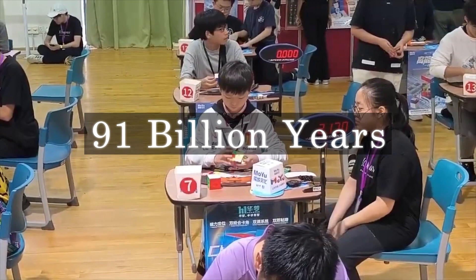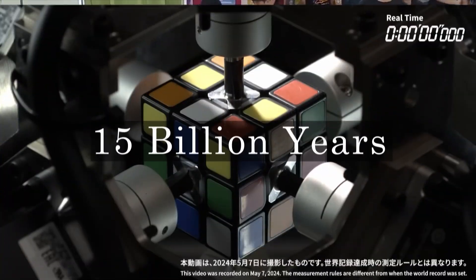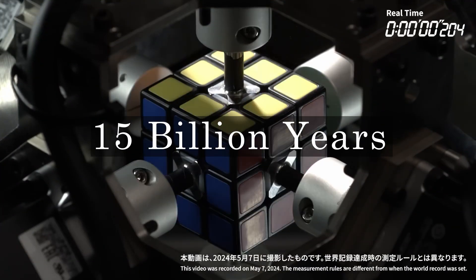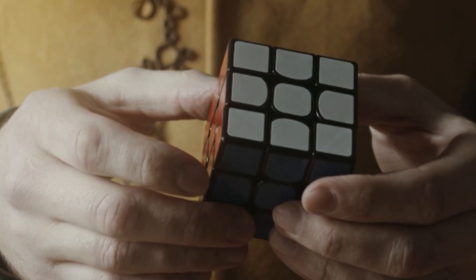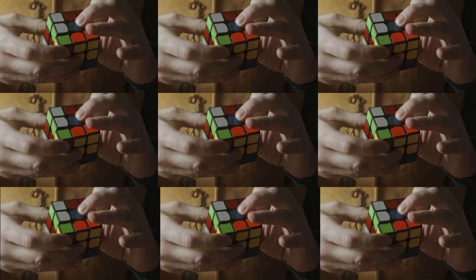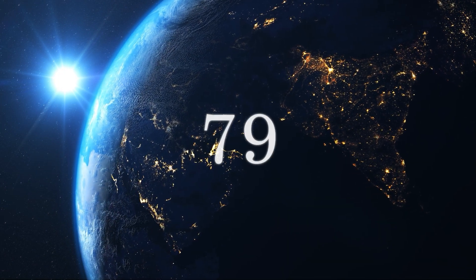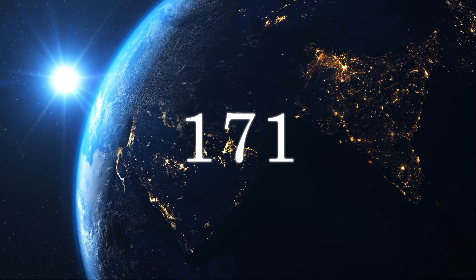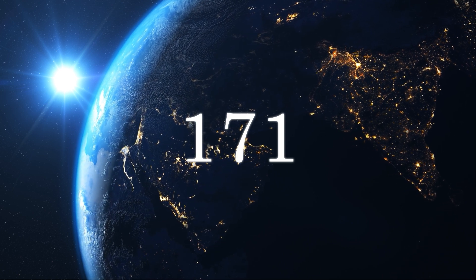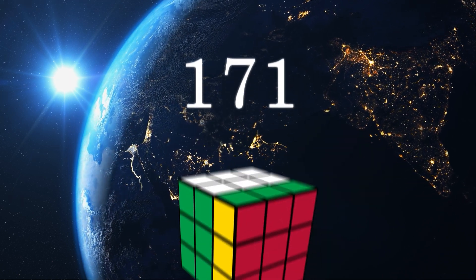And even if you turn as fast as the world record holder at his best, or the world's fastest robot, it's still gonna take a really long time. In fact, even if all 8 billion people on earth turned a Rubik's cube every second, it would still take 171 years on average for someone to solve a Rubik's cube—so not within their lifetimes.